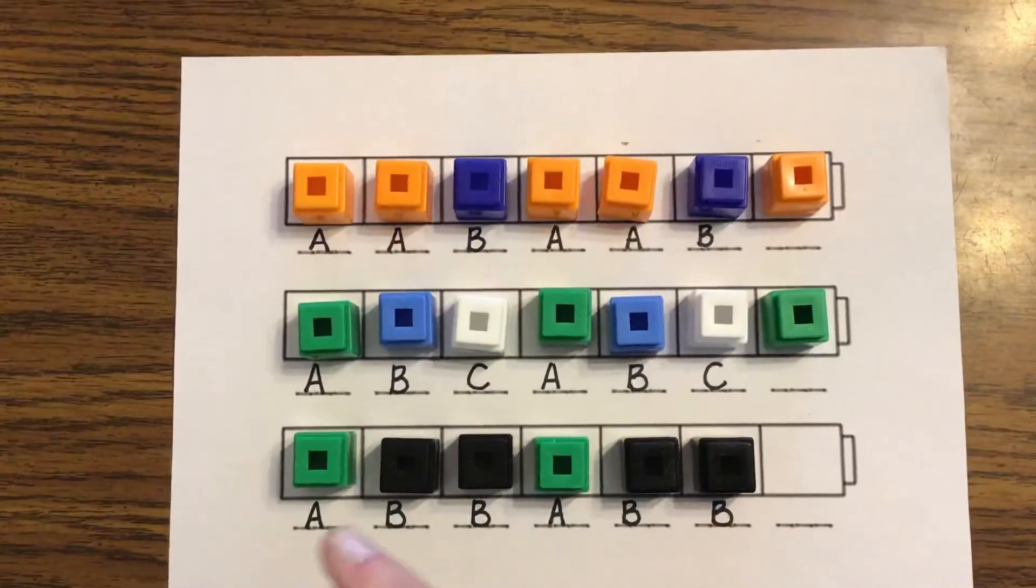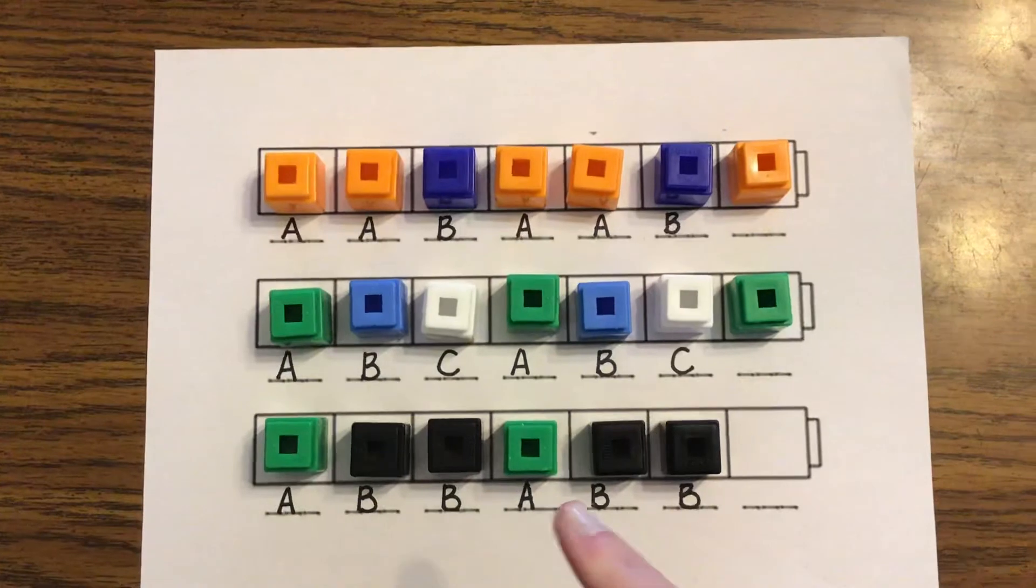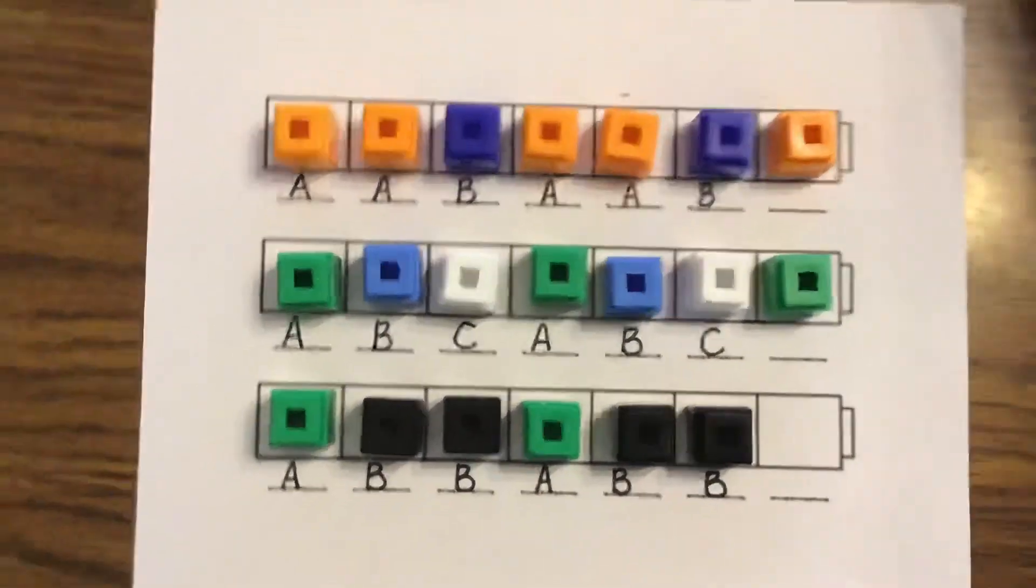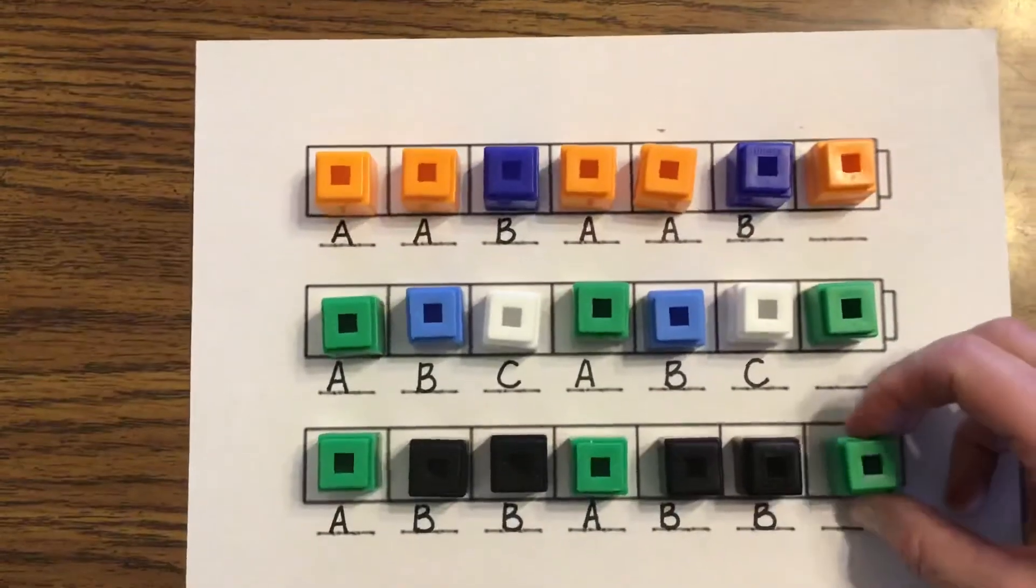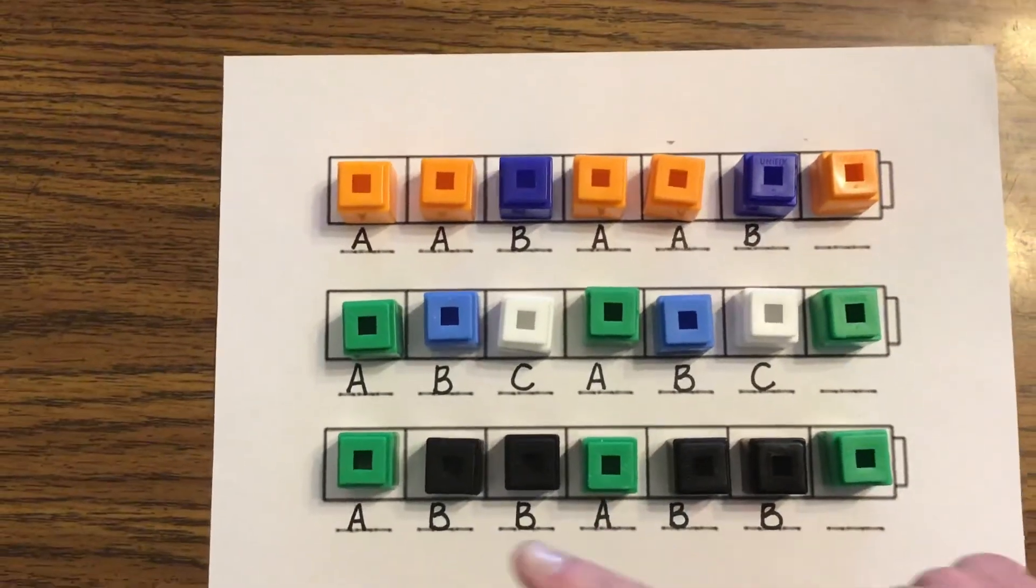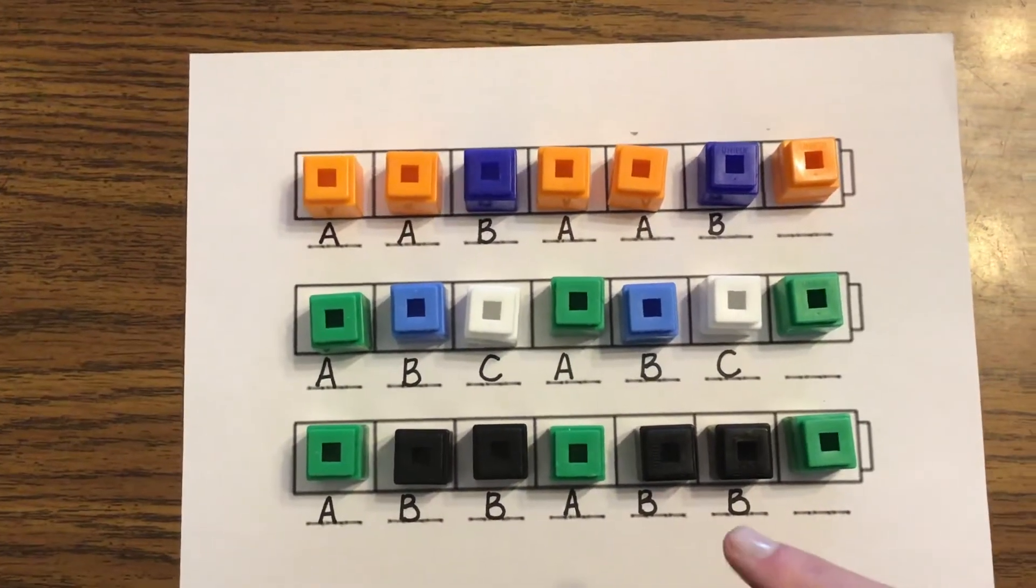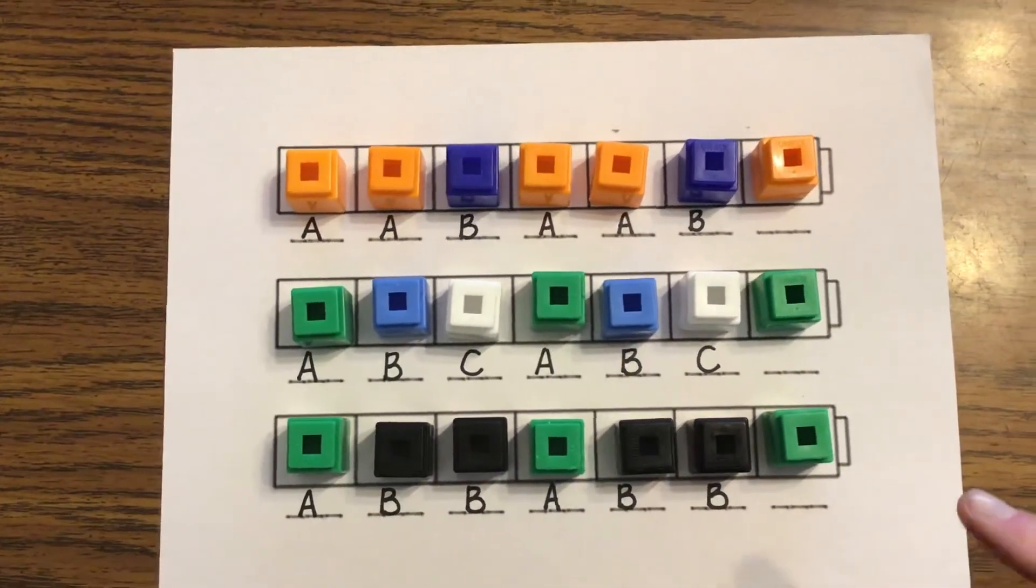Green, black, black. Green, black, black. What's next? Green, right. And what letter was the green in our pattern? The A's. A, B, B. A, B, B. A, B, B.